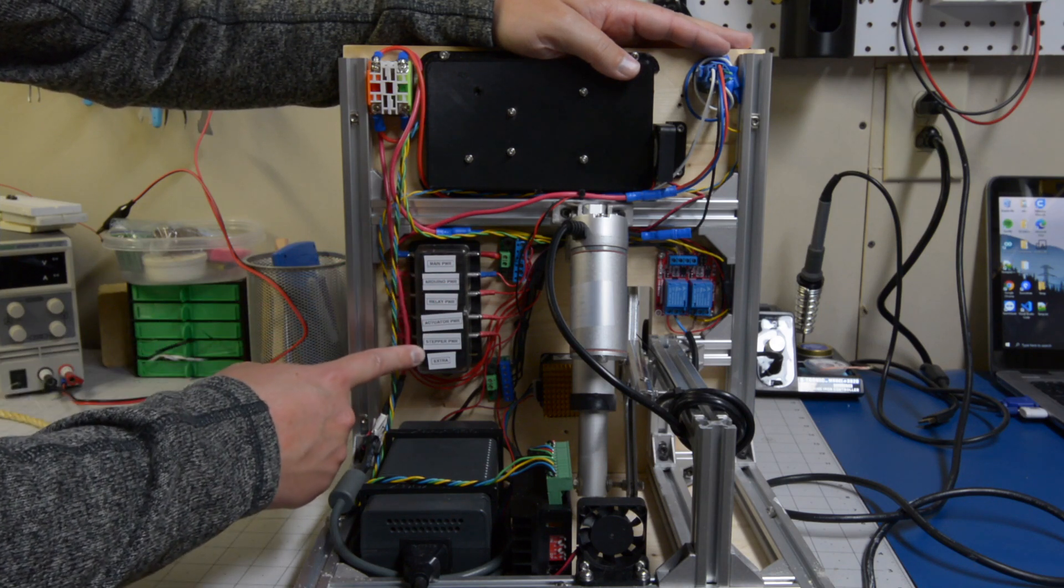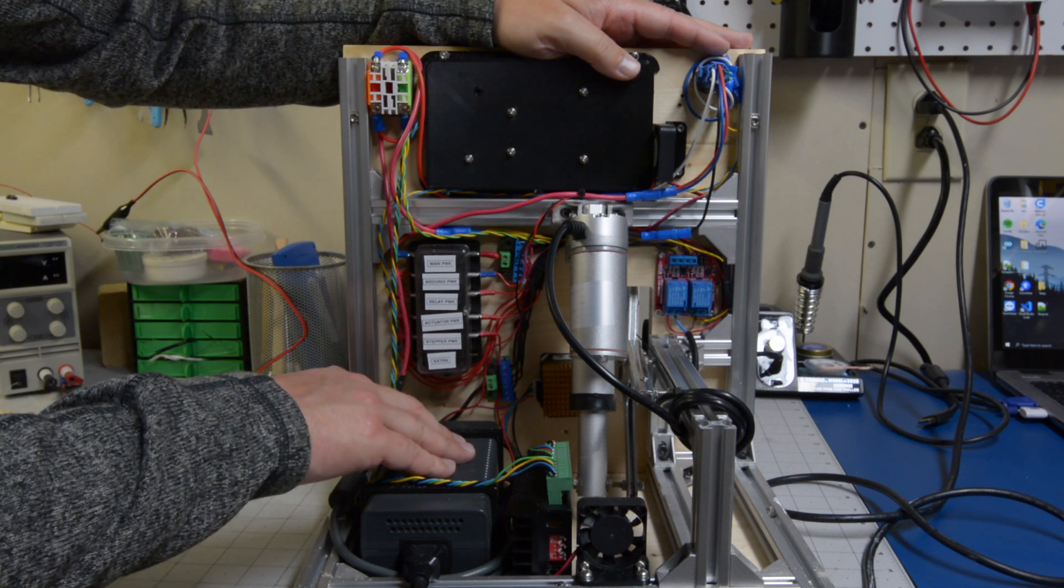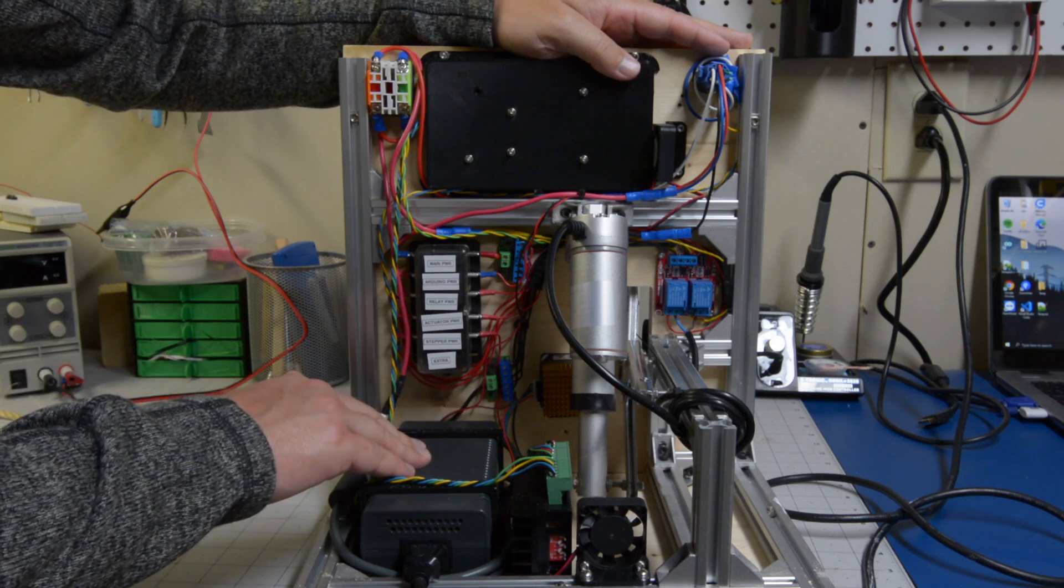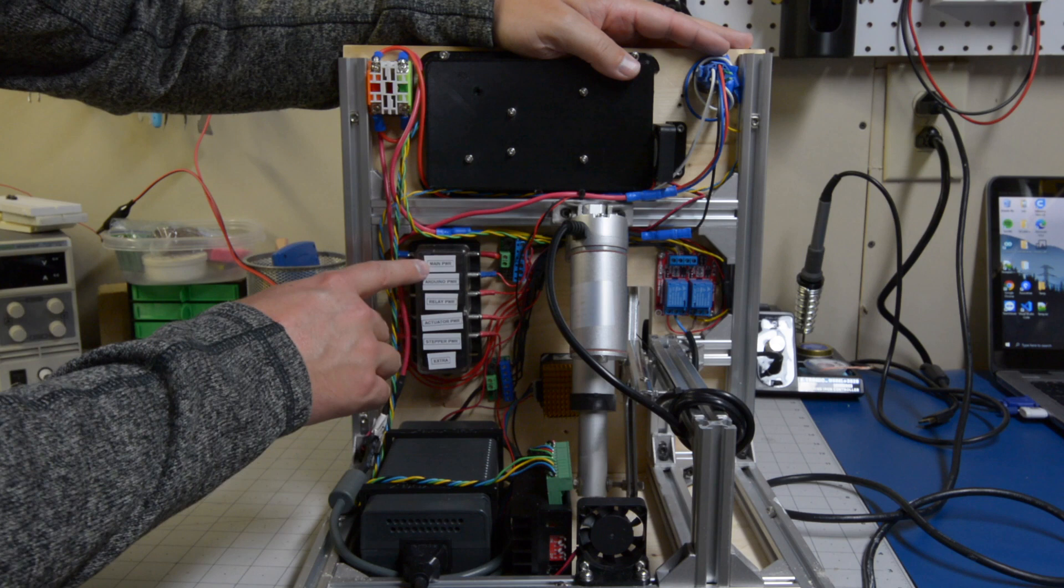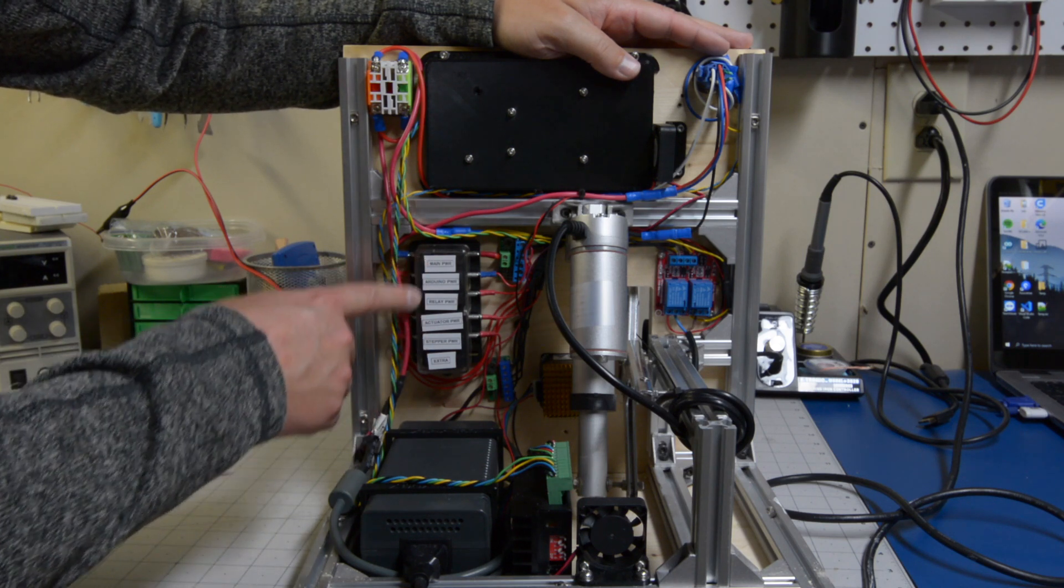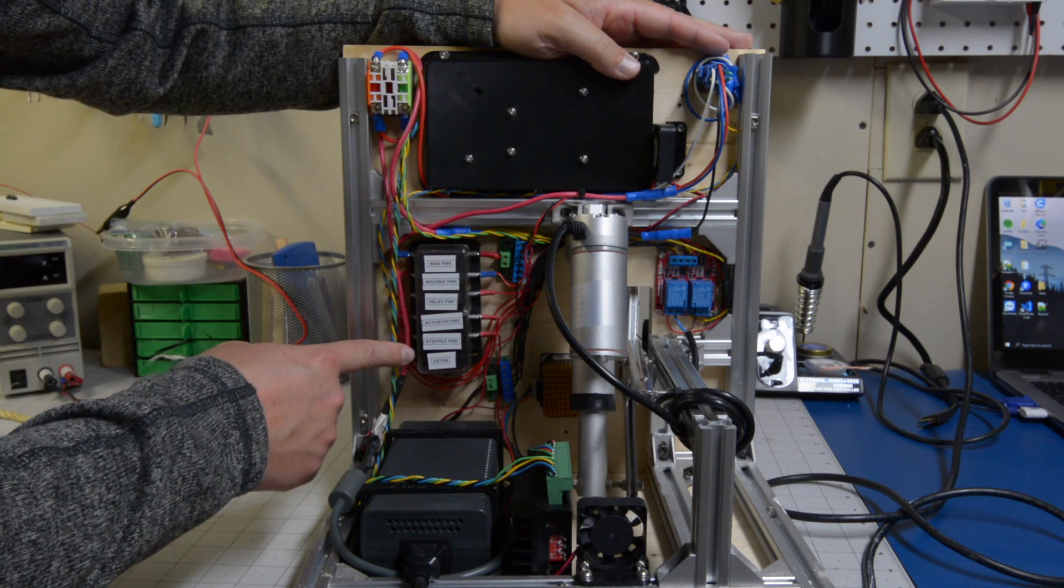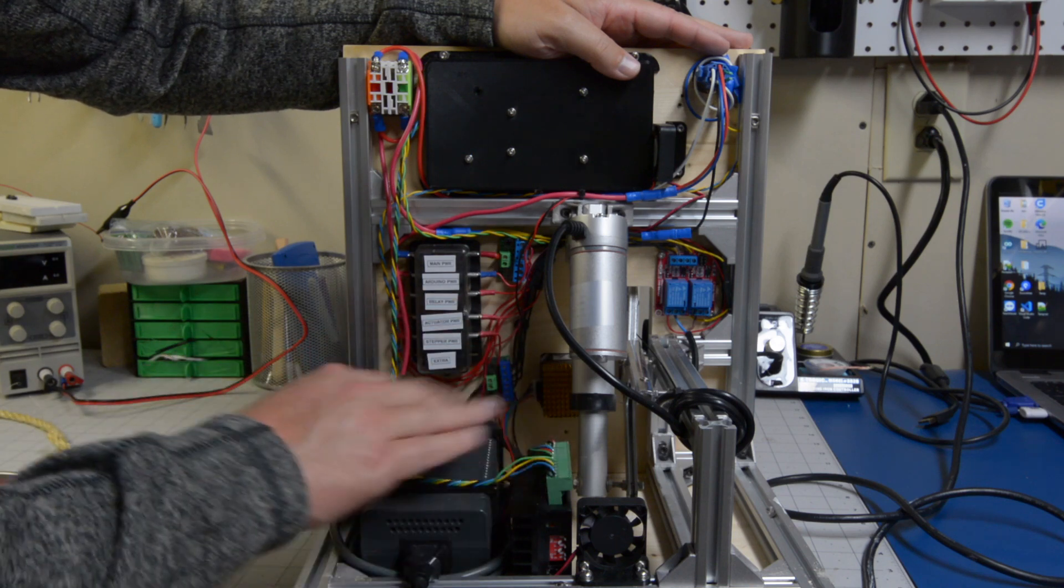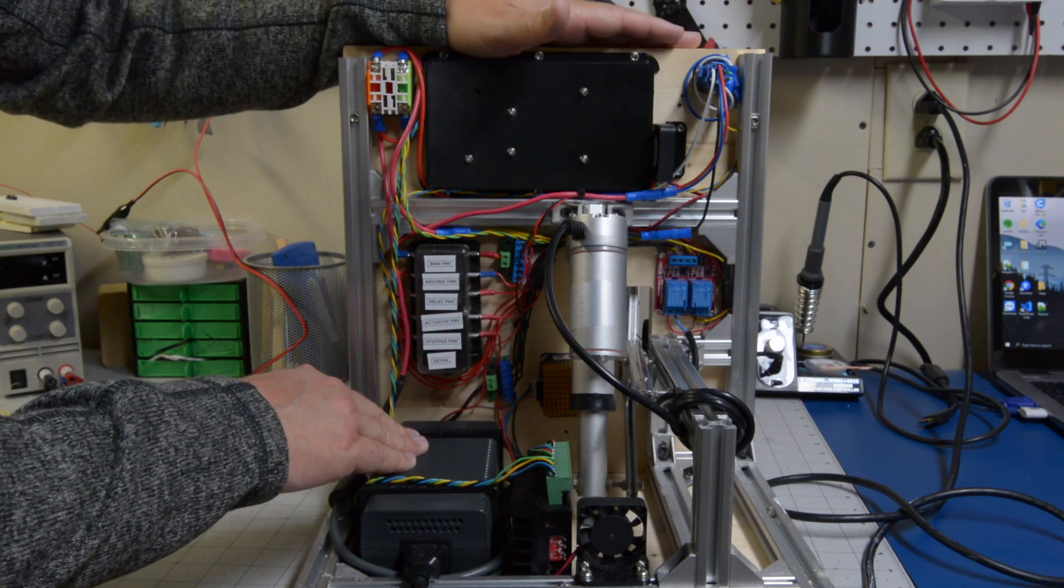This is just additional fuses for safety as this product is going to go in a wood shop and if there is a short circuit anywhere we don't want it to start on fire and cause any damage. So these fuses should protect it. We have a fuse for each main component and the main power source. As you can see we've got our main power, Arduino power, relay power, the actuator power itself and the stepper motor driver power. Extra fuse in case we decide to add any functionality to this later in the future.